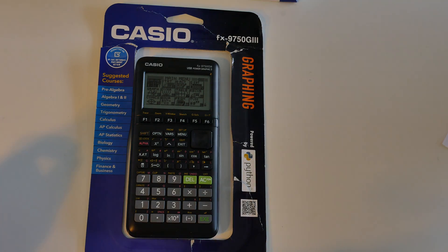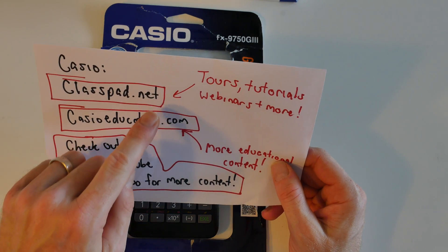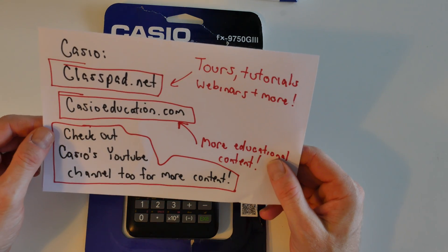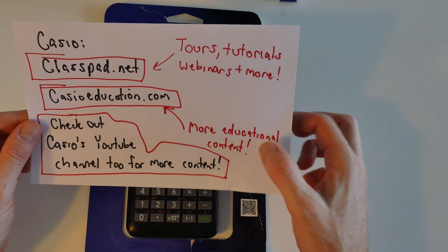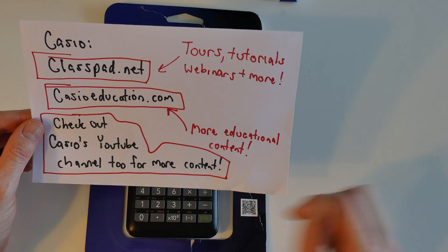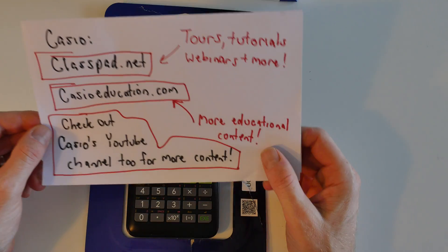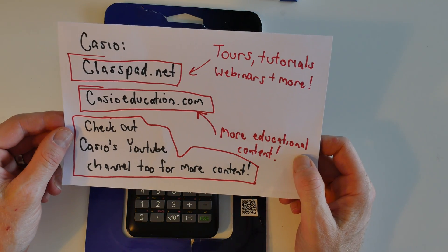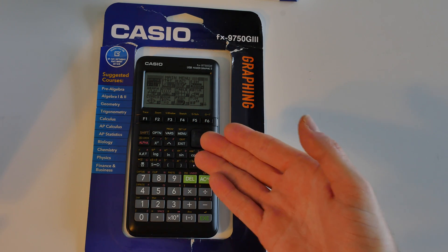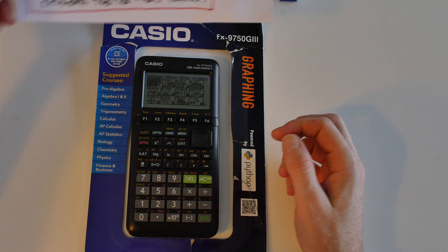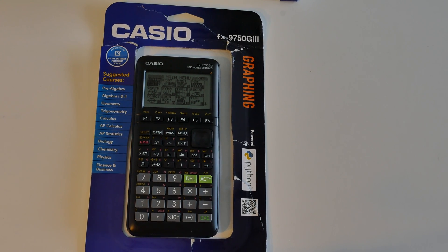There are great educational resources: classpad.net has tours, tutorials, and webinars, and casioeducation.com has more educational content. Casio even has a YouTube channel. I'll put links to all of this in my description. If you need a graphing calculator, this is the one I would go purchase — I think it's pretty stellar. Thanks for your time, and go check out Casio!